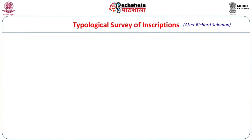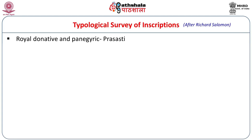These categories are: Royal, Donative, and Panegyric, that is Prashastis. Panegyrics are basically Prashastis, which are eulogies of kings, but Royal and Donative are two different things added to the Panegyrics. Often the eulogies also have a donative character — in the Prashastis there is a royal donation, perhaps the making of a tank or something else, and along with that the ruler is eulogized. But in this category there is another category which is purely royal in character.